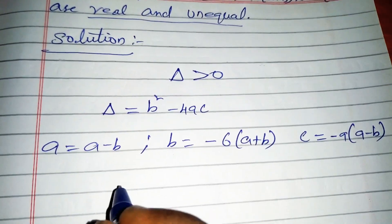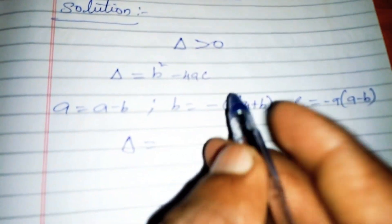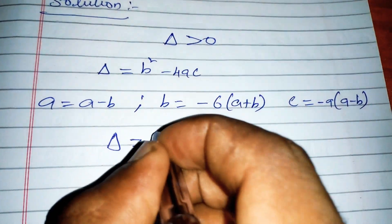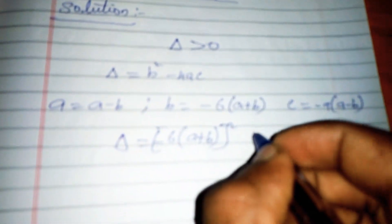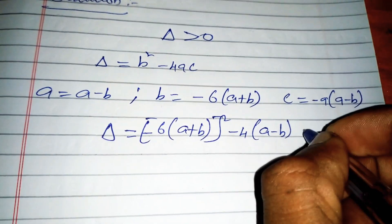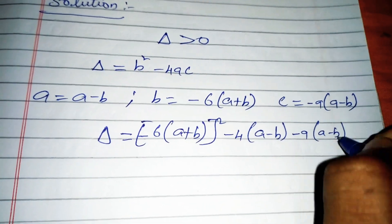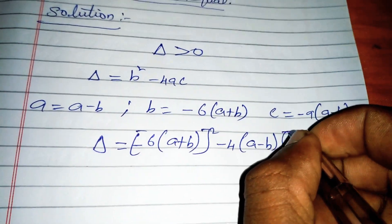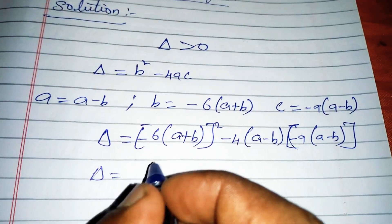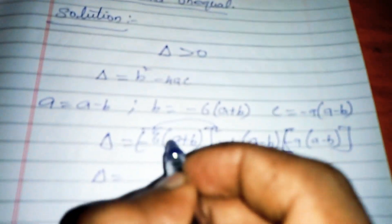Delta equals b squared minus 4ac. Substituting: b value is minus 6(a plus b), so the whole square is [minus 6(a plus b)] squared, minus 4 times (a minus b) times minus 9(a minus b). This gives us the expression to simplify.